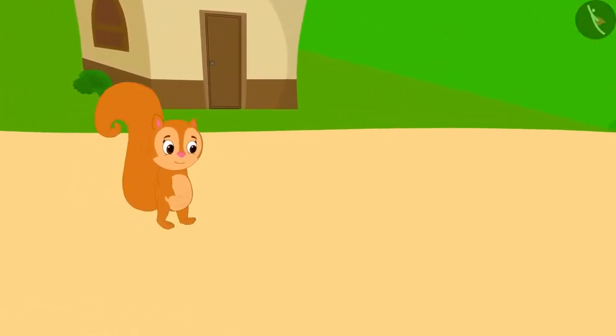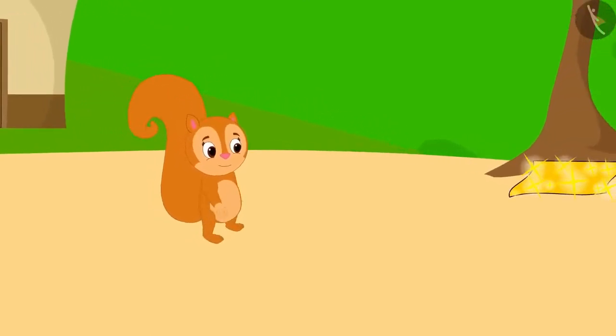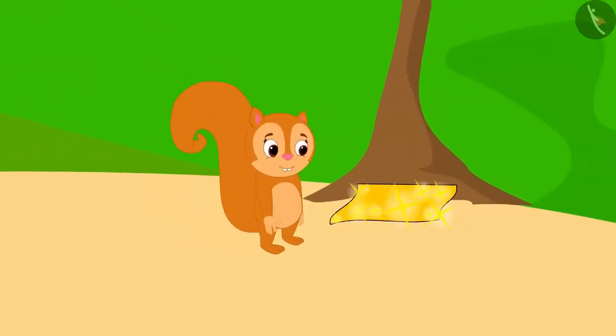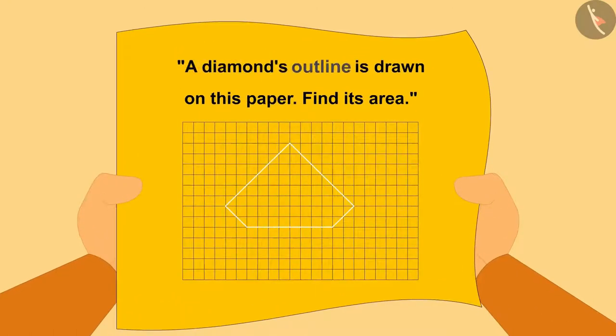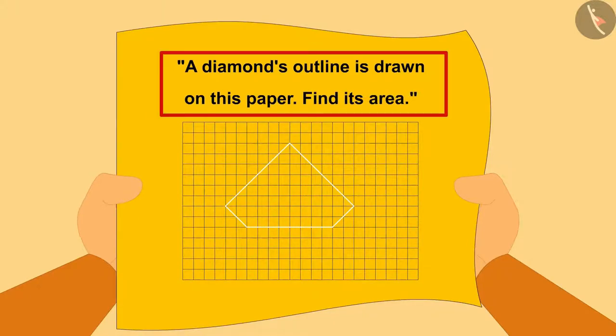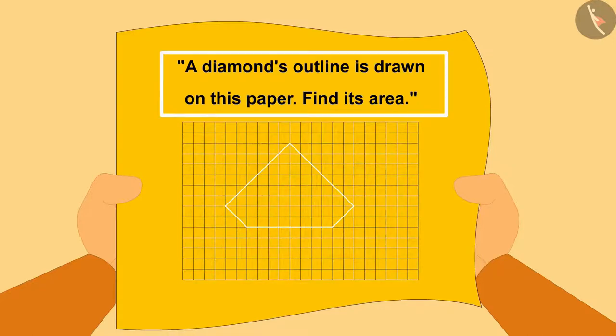Chanda was returning home from her shop. Just then, she saw a shiny paper under a tree. A diamond's outline is drawn on this paper. Find its area. Chanda read the instructions written on the paper.